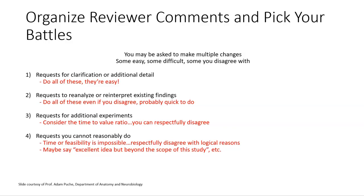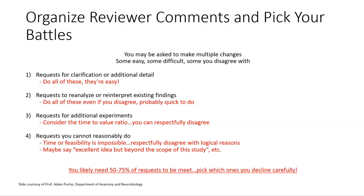Then there are requests you cannot reasonably do. You can say something like: excellent idea, but beyond the scope of the study. Ideally, you want to meet about 50 to 75 percent of the requests. Pick the ones you decline carefully. The 5B video - the second part of this fifth section - will provide some examples that we're going to look at together.